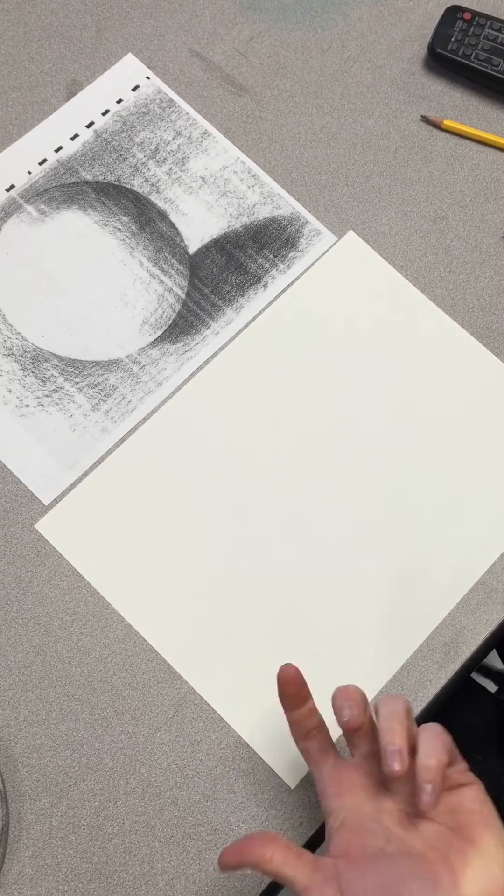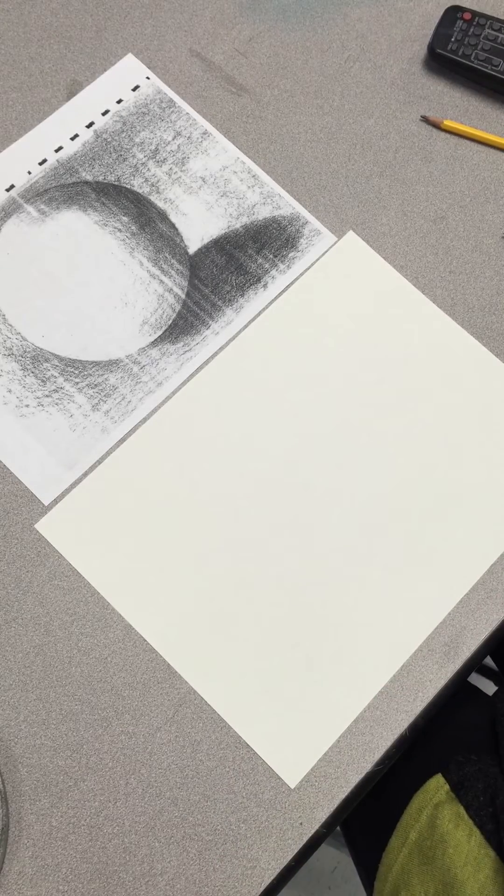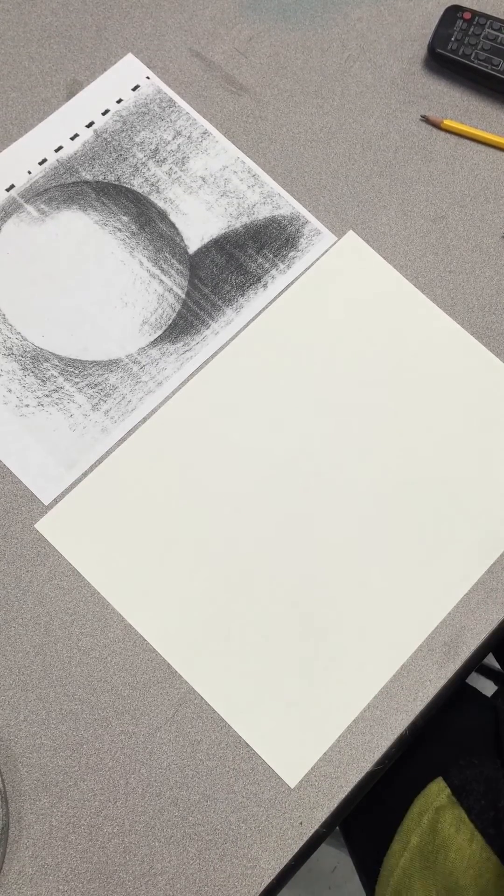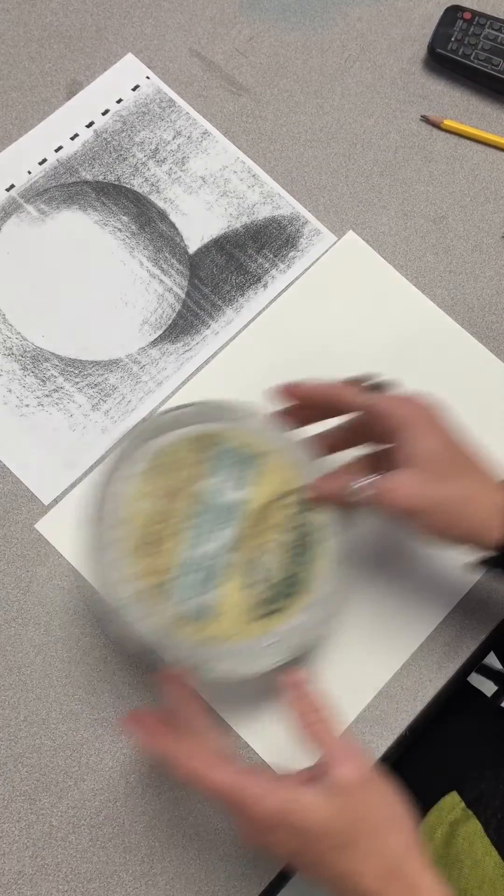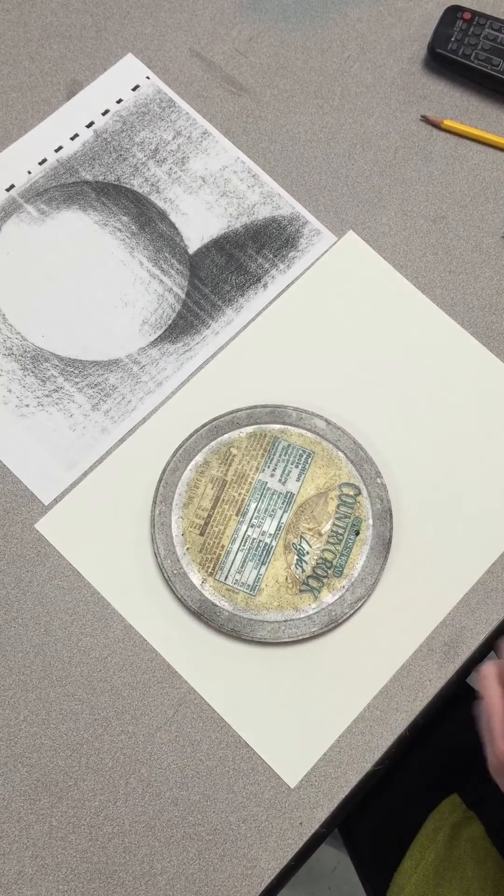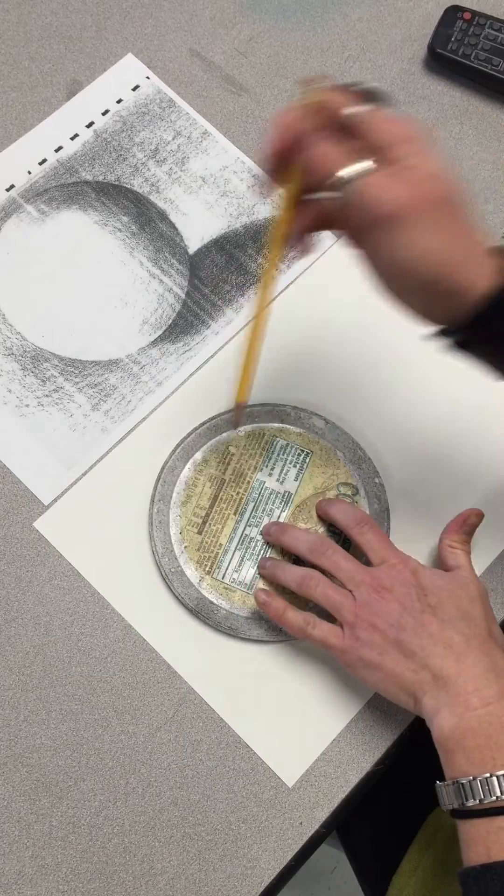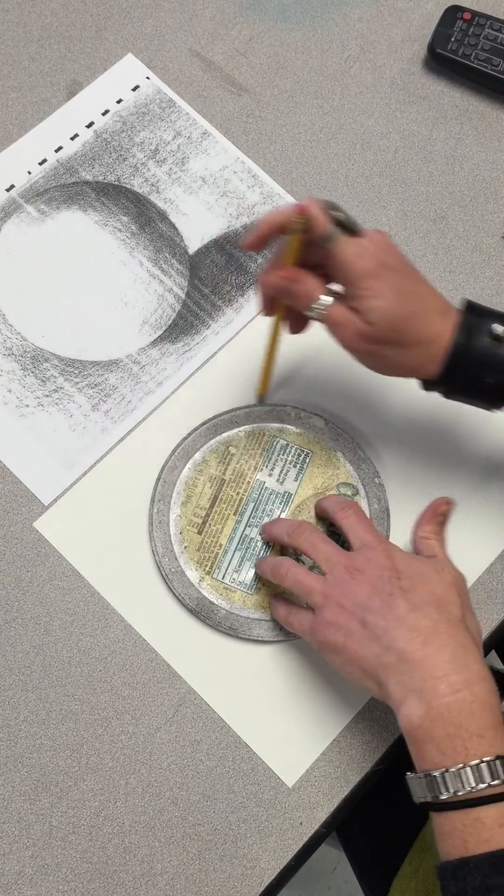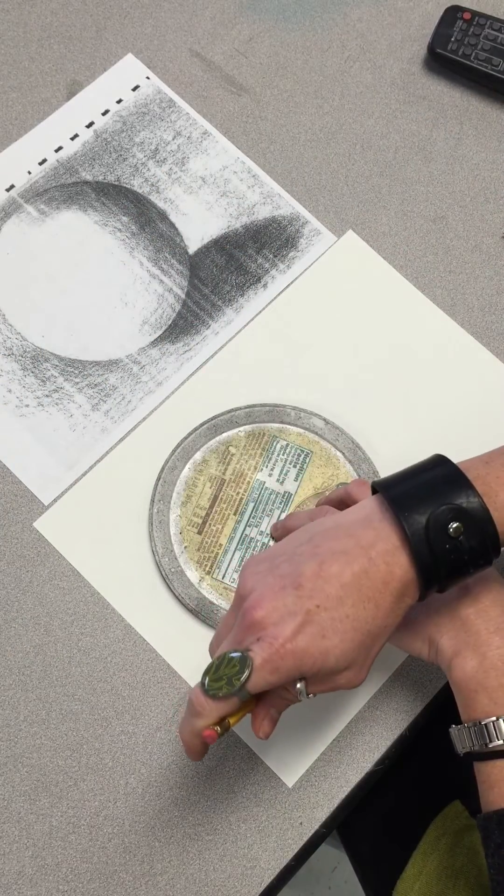Okay, today you're going to apply your shading techniques that you've learned in the last couple of days to shading the sphere. First you're going to get something to trace a perfect circle. I'm just going to use a lid and you're going to draw very lightly a circle on your paper.